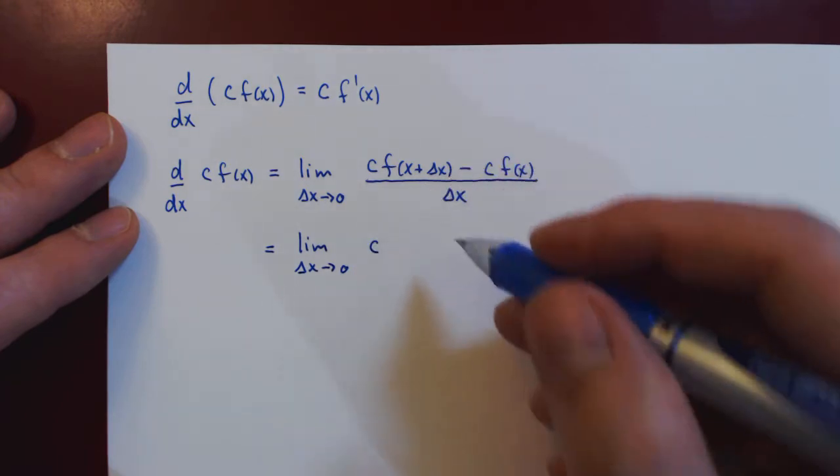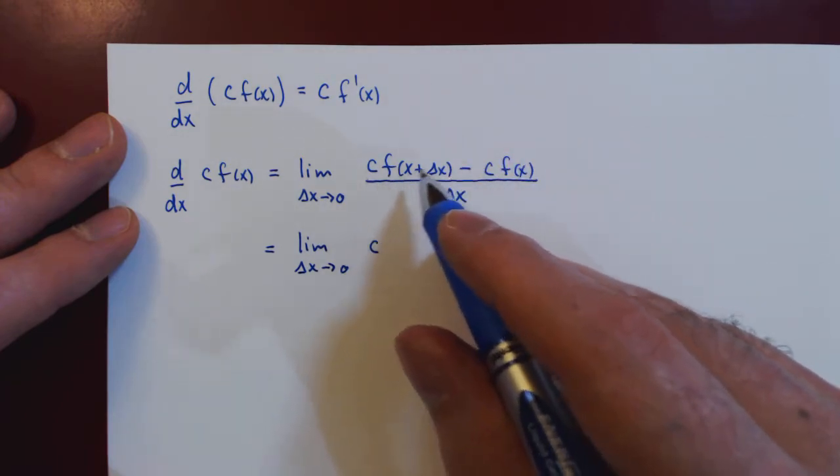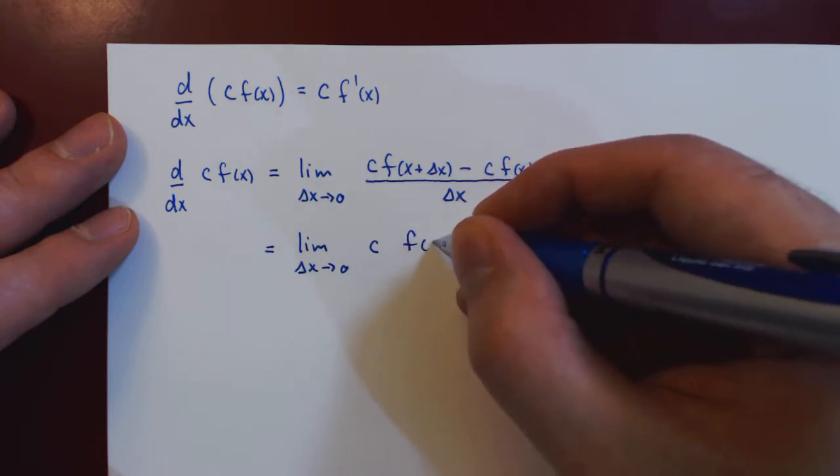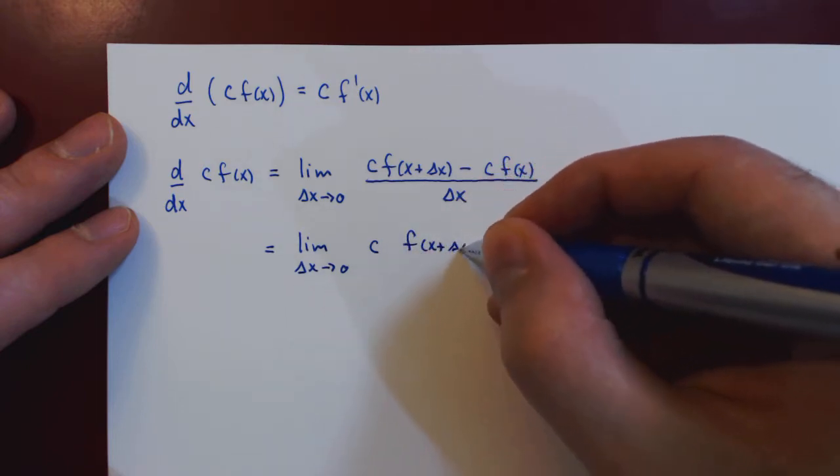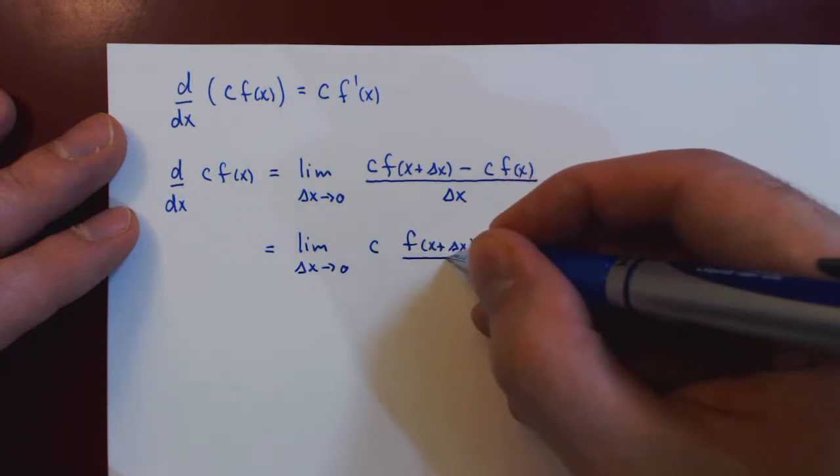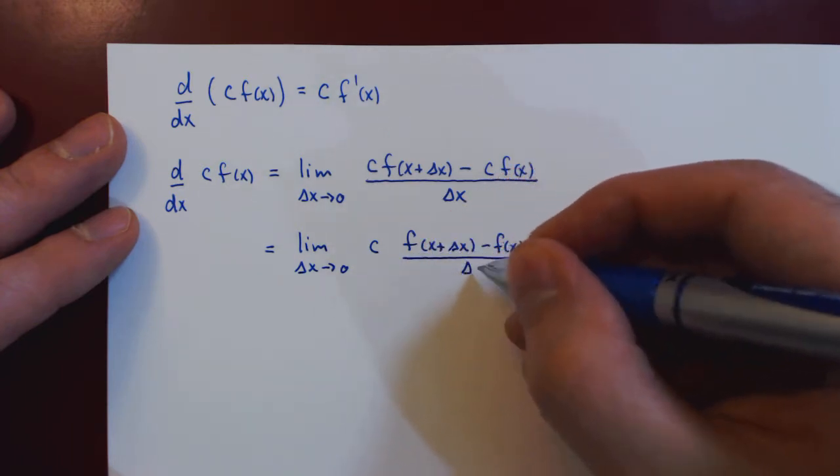And what are we left with? Well, on the numerator, f of x plus delta x minus f of x over delta x.